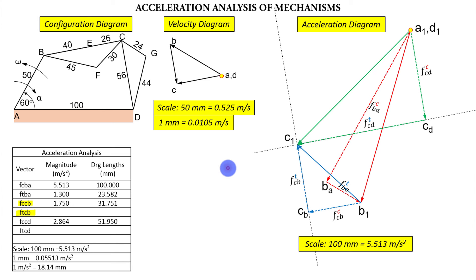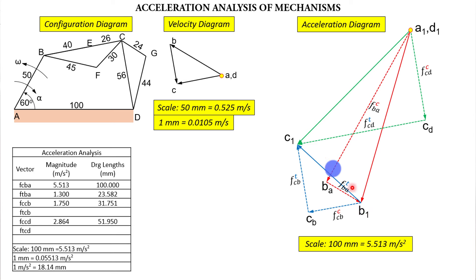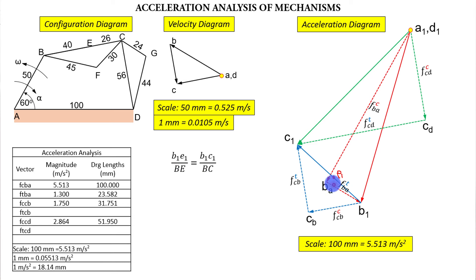Now there are some calculations to carry out for points E, F, and G. E is located between points B and C in the configuration diagram, so in the acceleration diagram it lies between B1 and C1. E is at 40 mm from B in the config diagram. Using the law of proportion: B1E1 / BE = B1C1 / BC, so B1E1 / 40 = 50.55 / 66. Solving gives B1E1 = 30.63 mm.